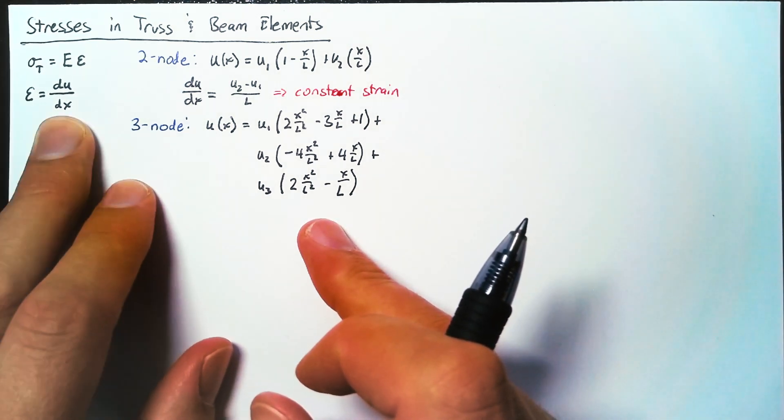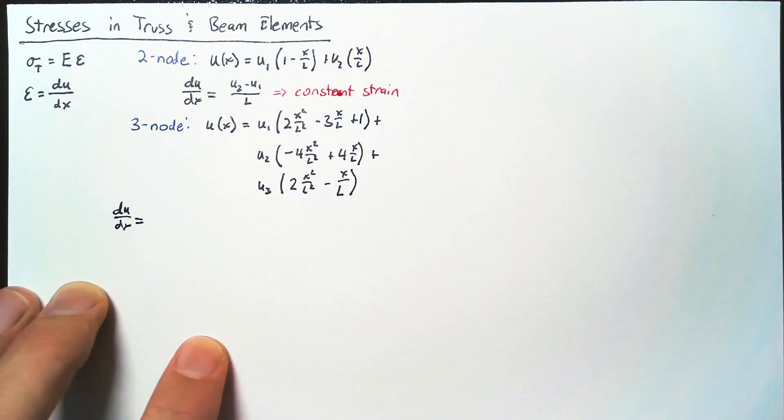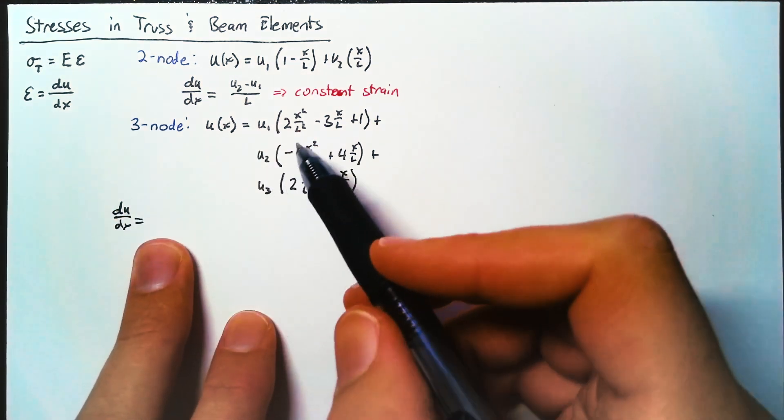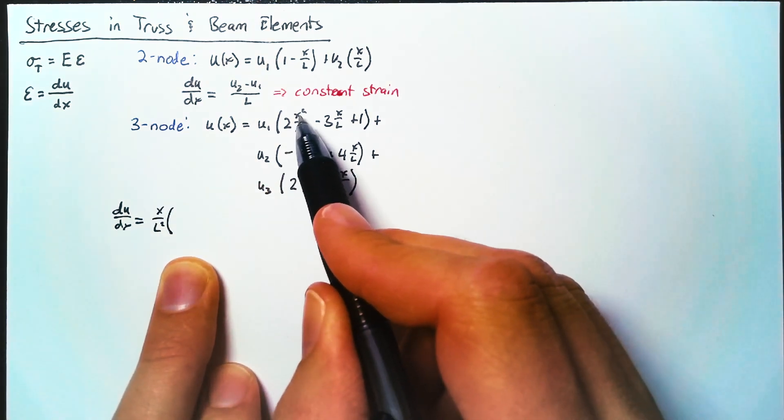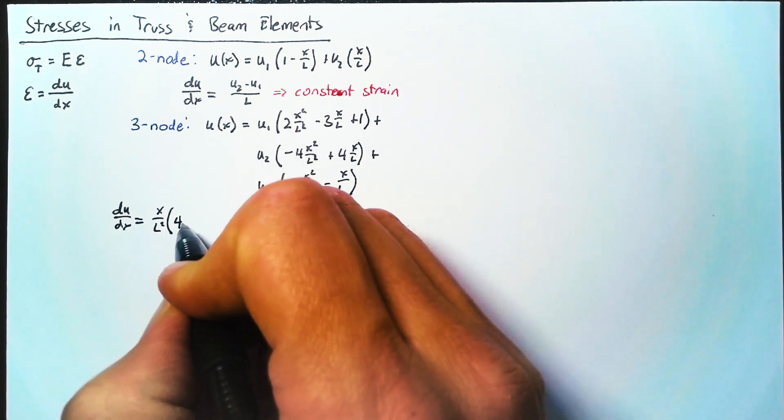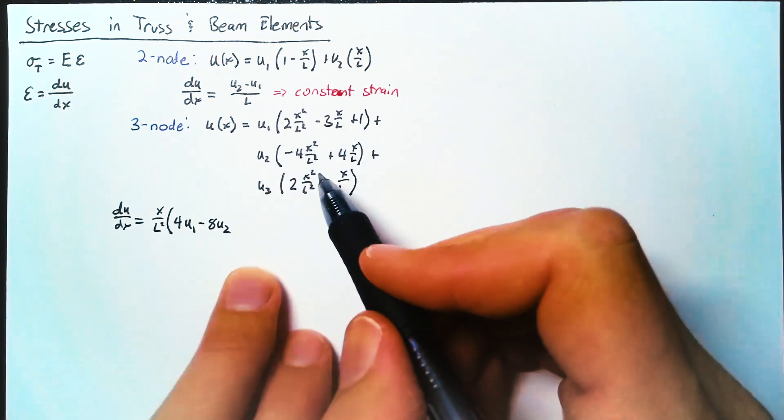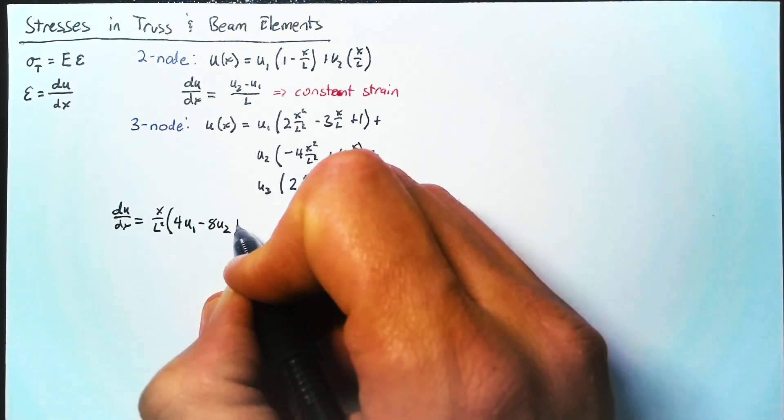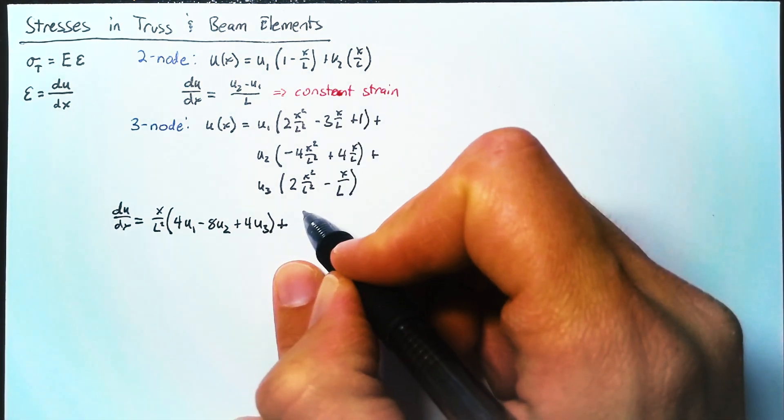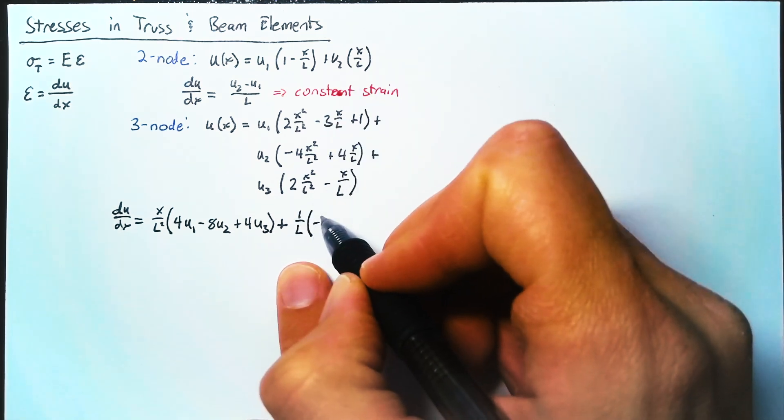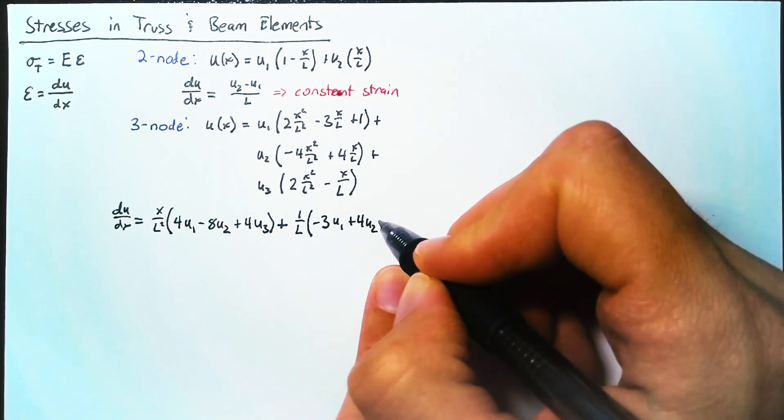So again, in order to calculate our strain, we just take a derivative with respect to X. And so we can write that we have X over L squared multiplied by, this will be 4 times U1, and then we have a minus 8 times U2, and then plus 4 times U3. We'll have another set of terms, we just have 1 over L out front. And that will be a minus 3U1 plus 4U2 minus U3.